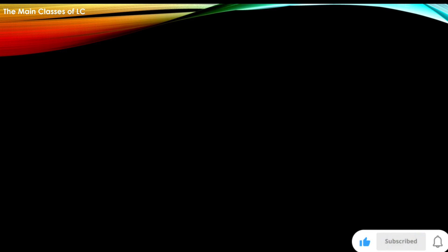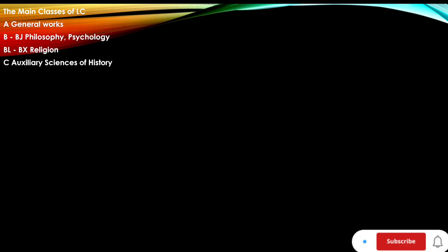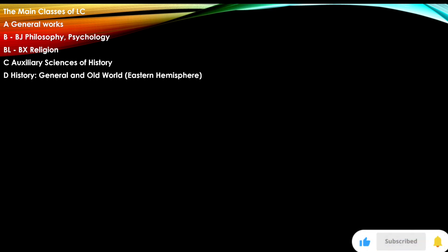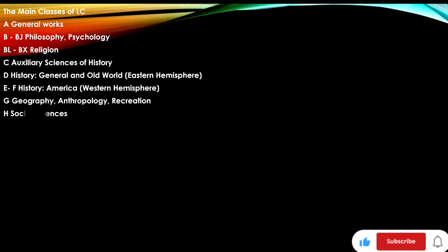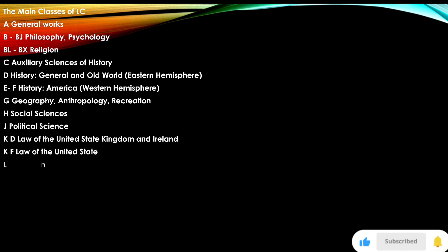The main classes of LC include: A — General Works; B — Philosophy and Psychology; BL — Religion; C — Auxiliary Science of History; and further classes D through Z covering History, Geography, Social Sciences, Political Science, Law, Education, Music, Fine Arts, Language, Science, Medicine, Agriculture, Technology, Military Science, Naval Science, Bibliography, and Library Science.